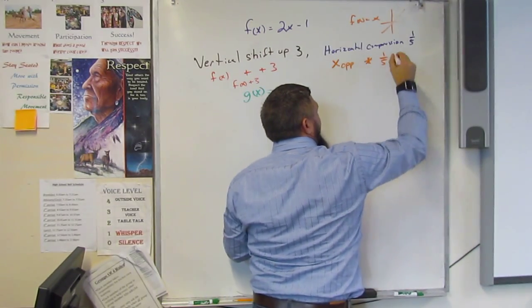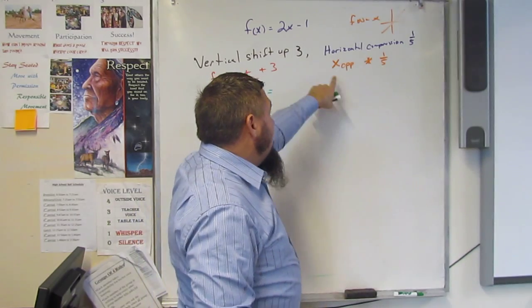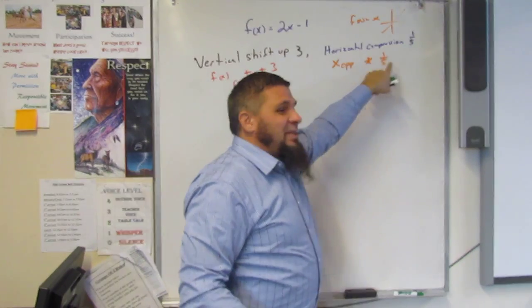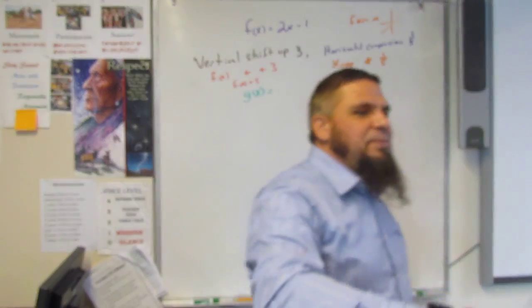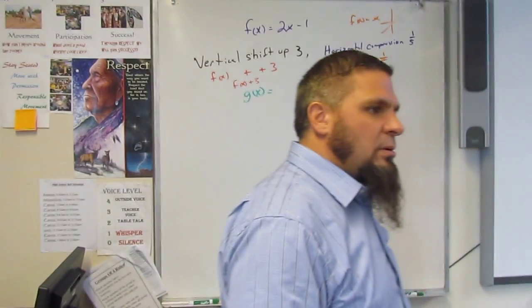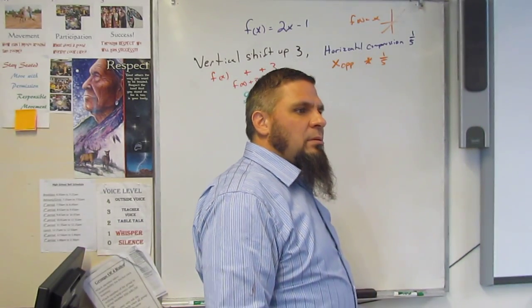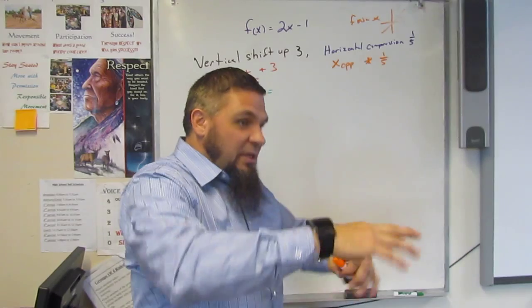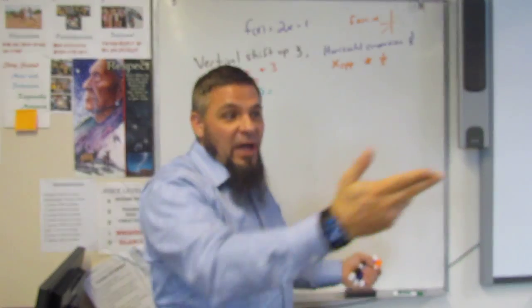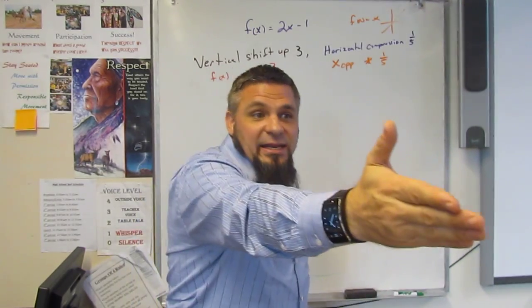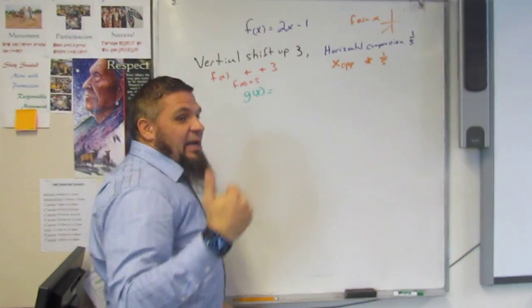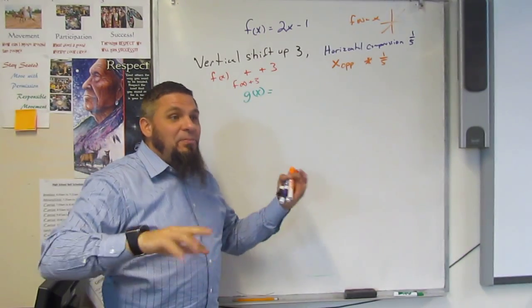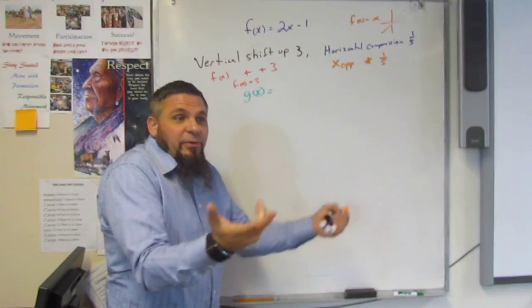So we're going to multiply by a factor of one-fifth. By one-fifth. But the problem here is, this says x-opposite times one-fifth. So what's the opposite of timesing one-fifth? Times it by five-one. Timesing it by the flip of one-fifth, which is five over one, or dividing it. So or dividing it by one-fifth, which means flip and multiply, which is still five over one.